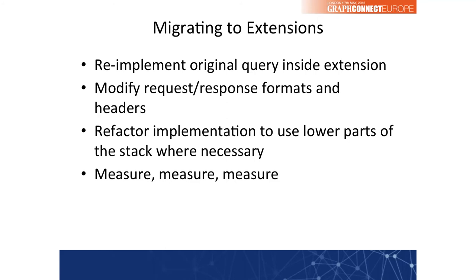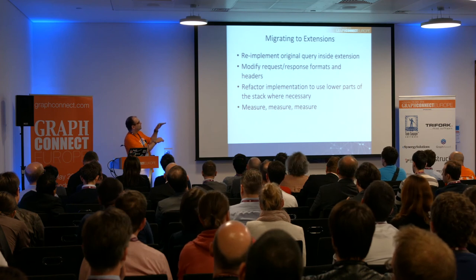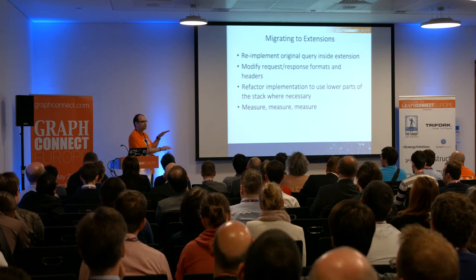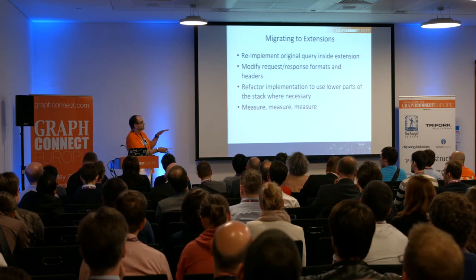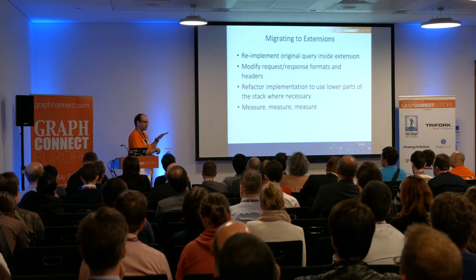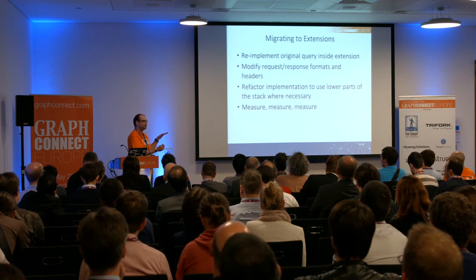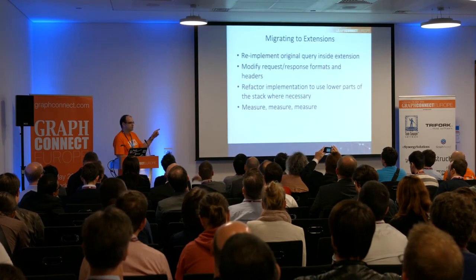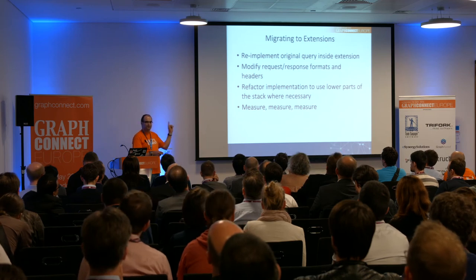Typically you start off using Cypher, and for some requests you decide to go with unmanaged extensions. You first run the Cypher statement inside an extension, then refactor that implementation into traversal or another technology. That's a step-by-step approach — always measure at each step. You need to know how much you gained from each step, and only do a few changes at a time to understand the effects of a certain optimization. Also, word of warning on these extensions: if you call System.exit(), it will work.